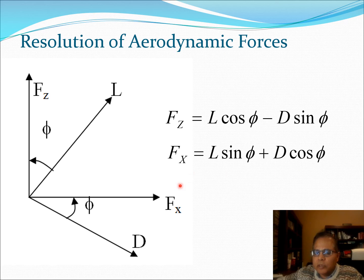To put it more clearly I have drawn this diagram here and you can clearly see that Fz would be L cos phi, that's this component, minus D sine phi, that is this component. Similarly, Fx would be L into sine phi, that's this component here, plus D into cos phi which is this component here.